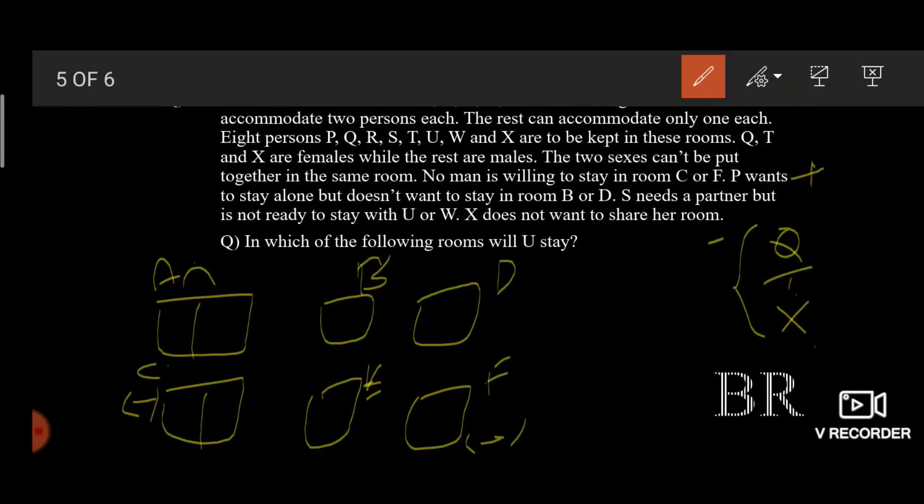So P wants to stay alone but doesn't want to stay in room B or D. So P doesn't want to stay in room B, P doesn't want to stay in room D, and P doesn't want to stay in room A because he wants to stay alone. And hence P stays in room E.